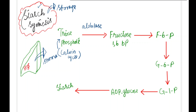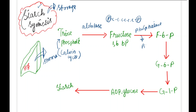Fructose-1,6-bisphosphate has 6 carbons with phosphate groups at positions 1 and 6. It converts into fructose-6-phosphate by removal of the phosphate at carbon-1, with the help of an enzyme called phosphatase. Wherever phosphatase enzyme is present, it is always involved in the removal of phosphate, i.e., dephosphorylation.